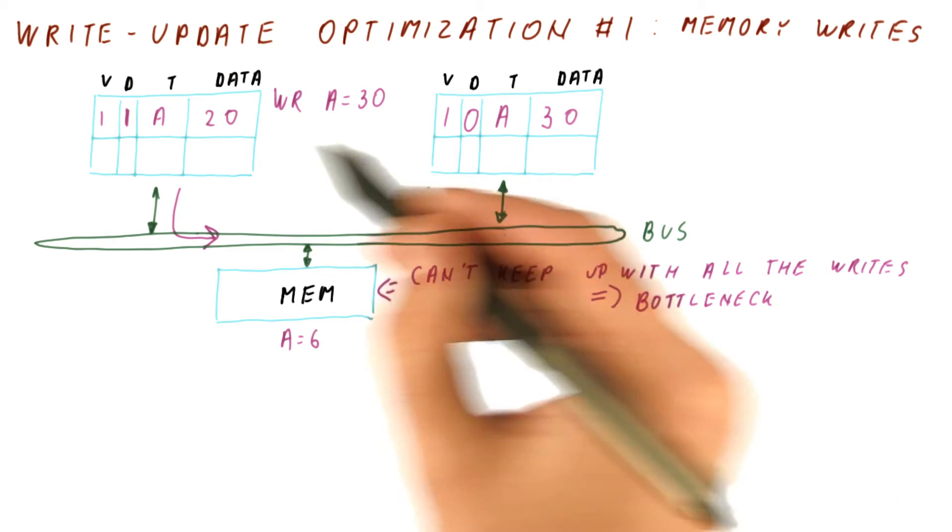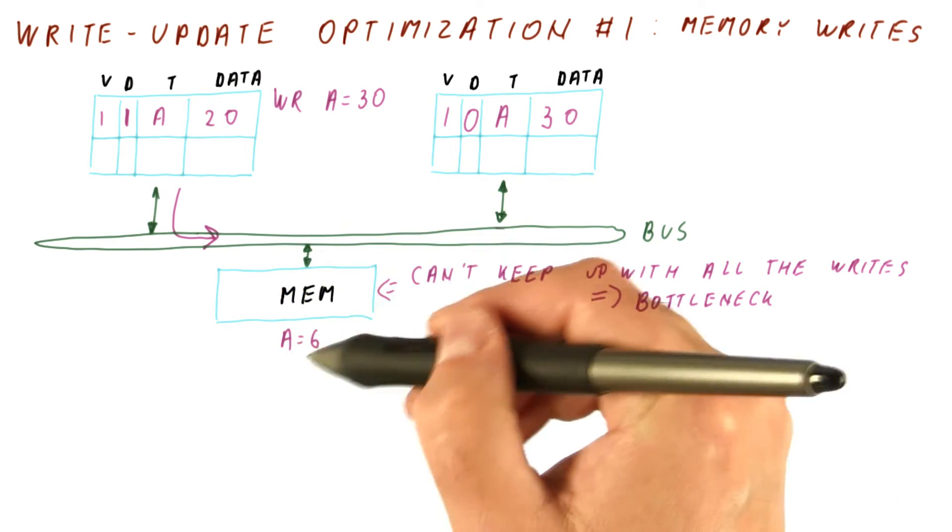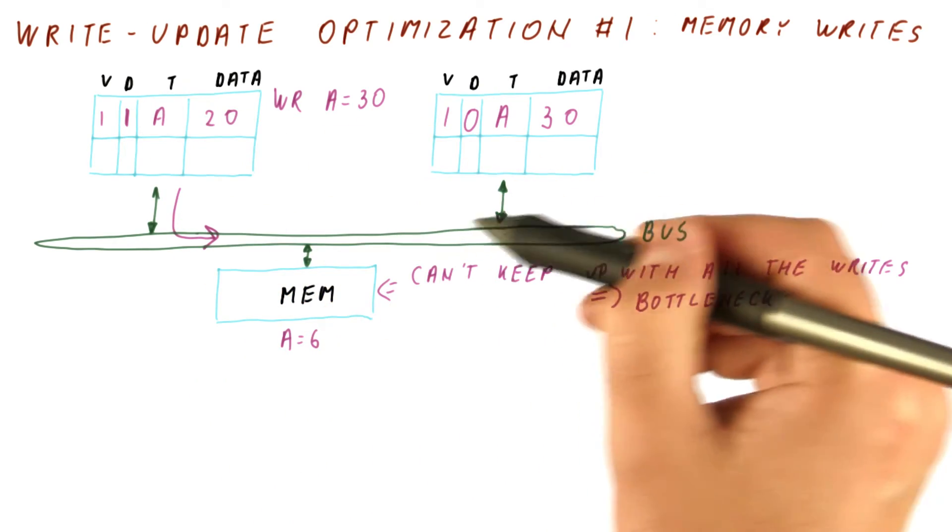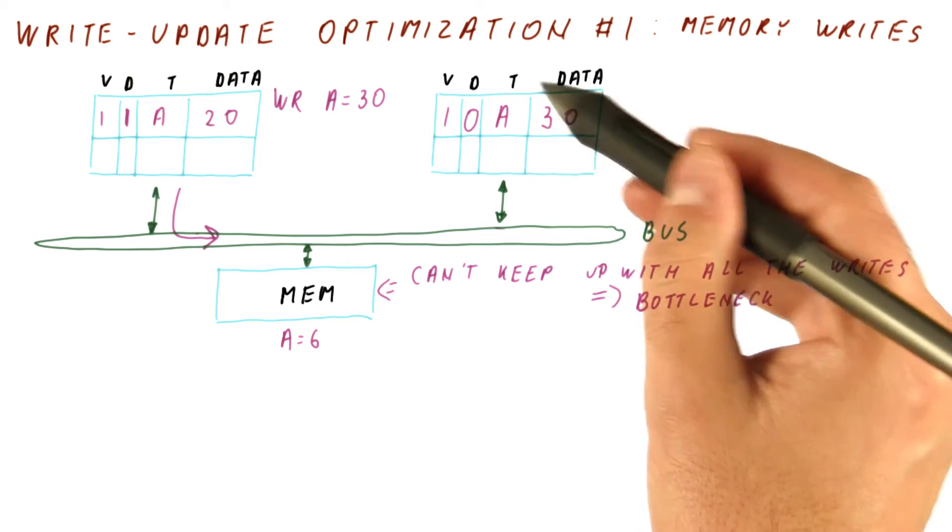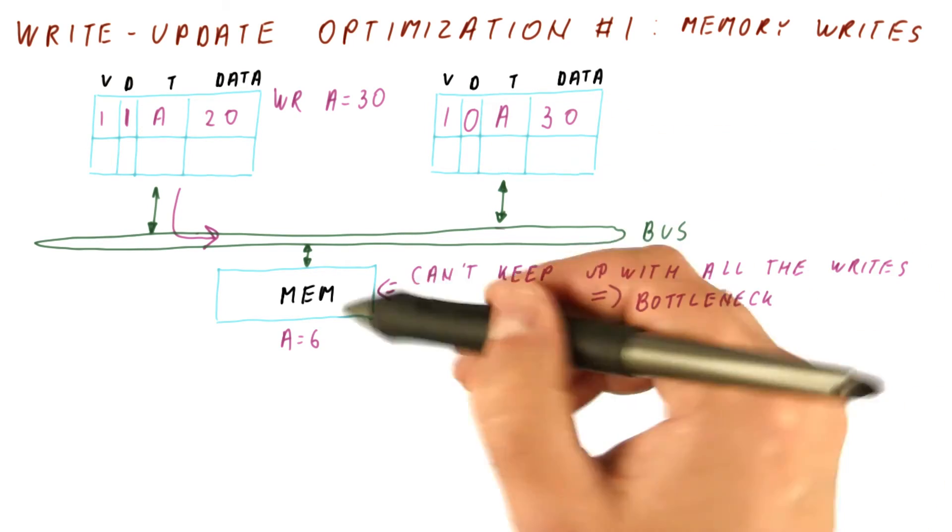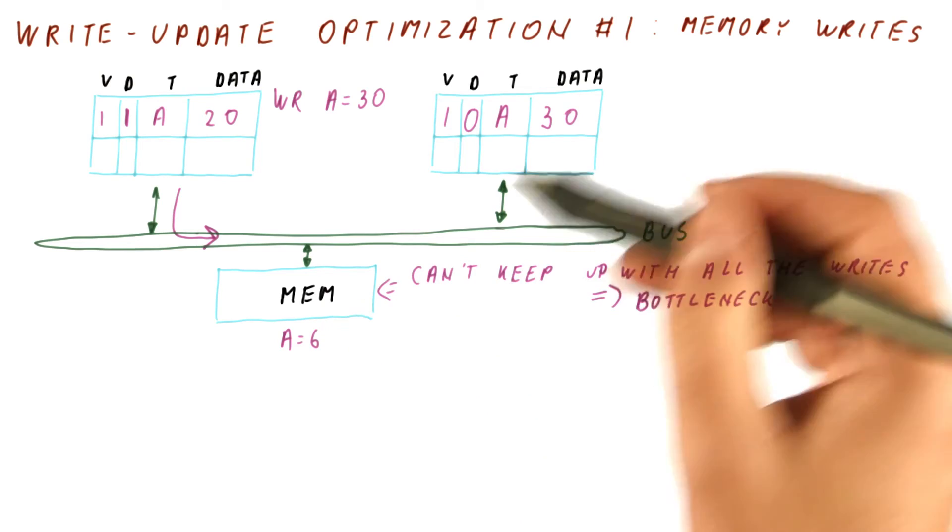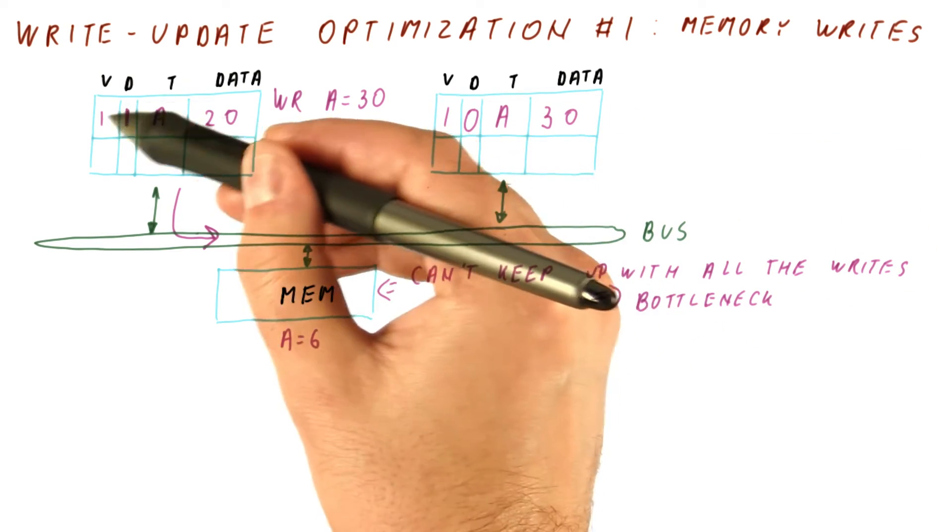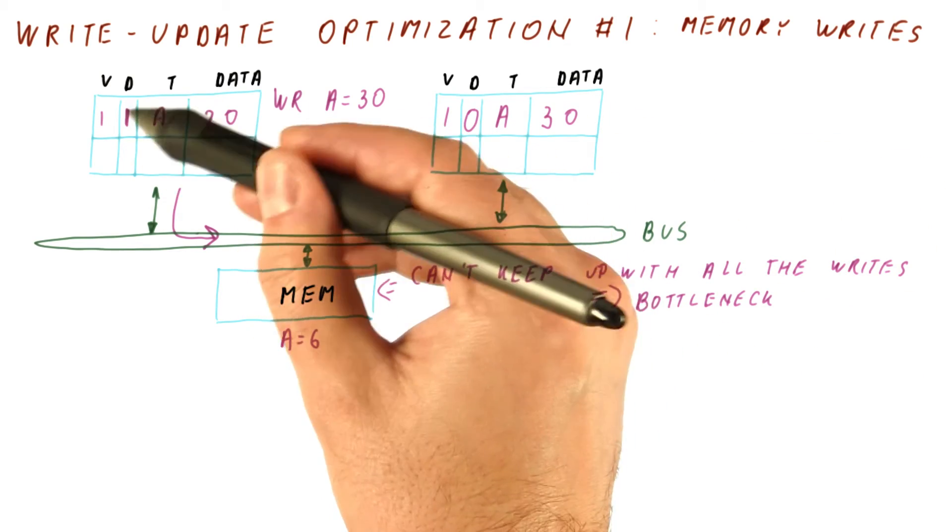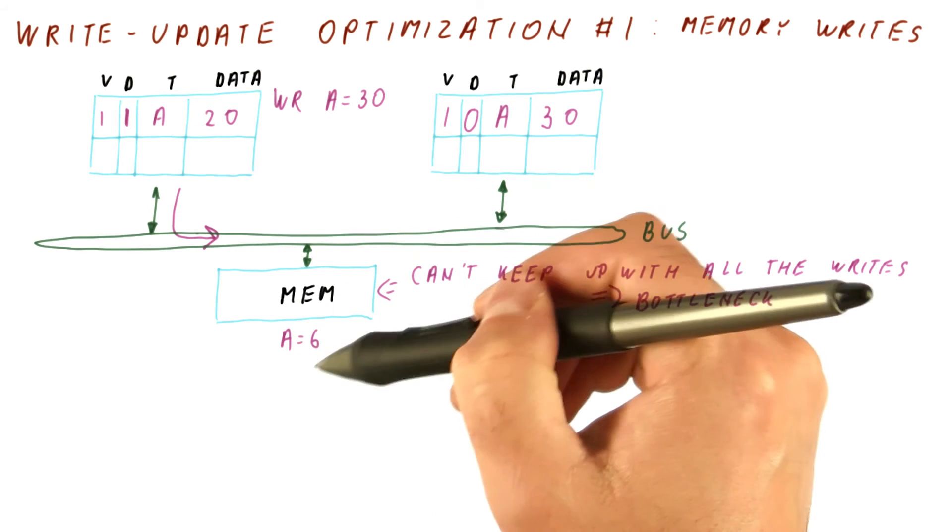So as you can see, we can now do many writes without updating the memory. We can even move the responsibility for updating memory to another cache and keep writing there without the updates to memory. Only when the last writer replaces the block that is still dirty will we have a single write to memory.